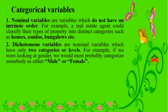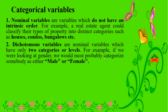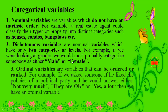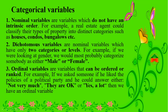Dichotomous variables are nominal variables which have only two categories or levels. For example, if we are looking at gender, we would most probably categorize somebody as either male or female. Since there are only two categories, this is known as a dichotomous variable.